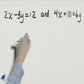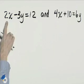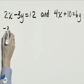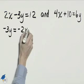In order to find the slope, solve the equations for y. We can move 2x to the right by subtracting. This gives us negative 3y equals negative 2x plus 12.